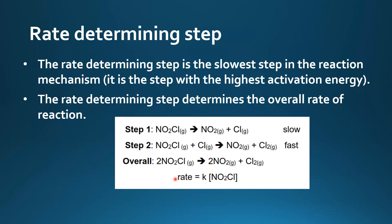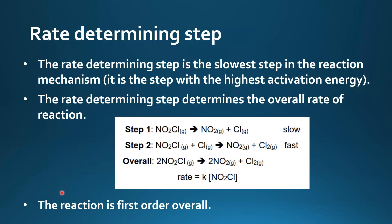When we write the rate expression, we look at the slower step, which is step 1. We write rate equals K, and the rate depends on the concentration of NO₂Cl, so we write that in the rate expression. From the rate expression, we can see that the reaction is first order overall.